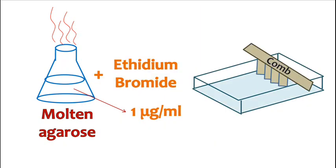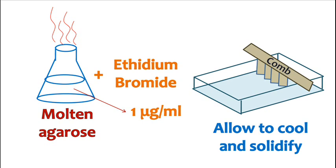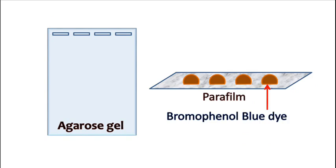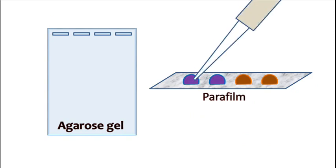The agarose is then mixed with ETBR and poured in the tray. Once solidified, the gel can be used for electrophoresis. For analyzing DNA samples, about 2 to 5 microliters of sample is mixed with a drop of bromophenol blue and loaded in the gel. Bromophenol blue is a dye used to monitor electrophoresis.